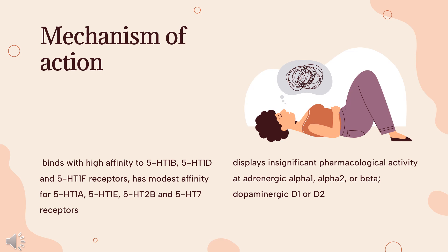While the precise mechanism of action of Lasmiditan is unclear, it likely supports this neurogenic hypothesis by exerting its therapeutic effects through potent and selective agonism of the 5-HT1F receptor. 5-HT1F receptors are found in both the central and peripheral nervous system, on the central and peripheral ends of trigeminal neurons, and appear to contribute to hyperpolarization of nerve terminals and inhibition of trigeminal neuronal activity. Lasmiditan's agonism at these receptors may, therefore, inhibit the firing of trigeminal nerves responsible for migraine headache pain.